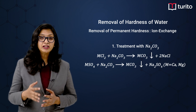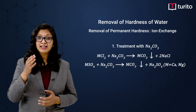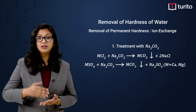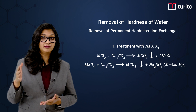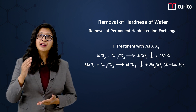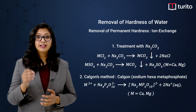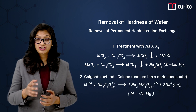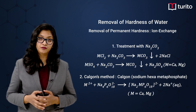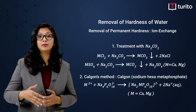When treating with Na2CO3, the calcium and magnesium present in the water will be replaced with sodium, and thus it will no longer be hard water. Next is the Calgon method, in which we use Calgon — which is nothing but sodium hexametaphosphate. Here also, the calcium and magnesium will be replaced with sodium.